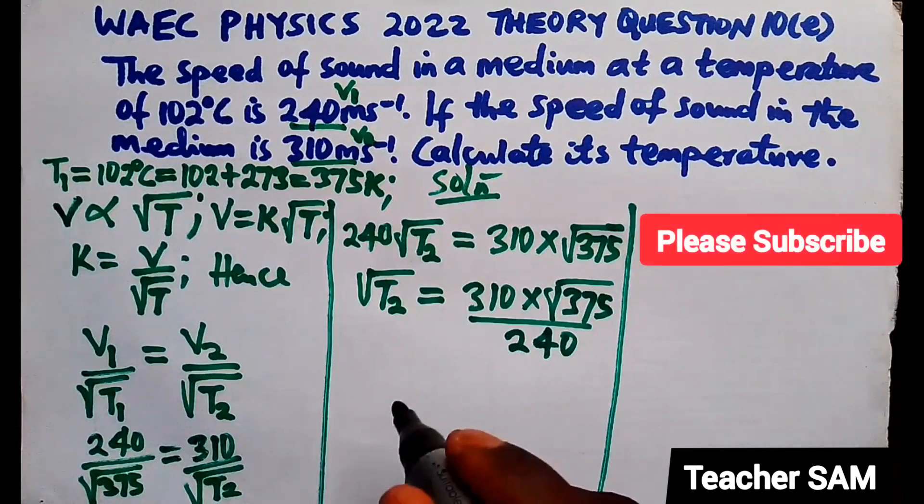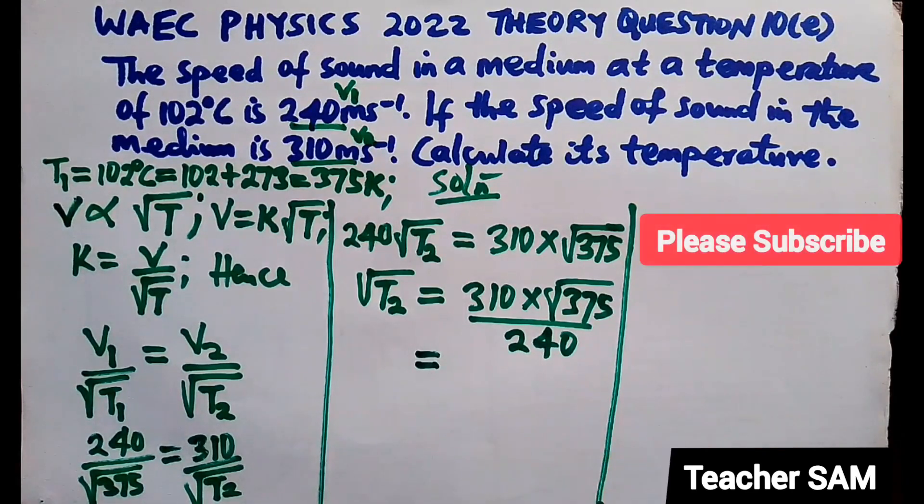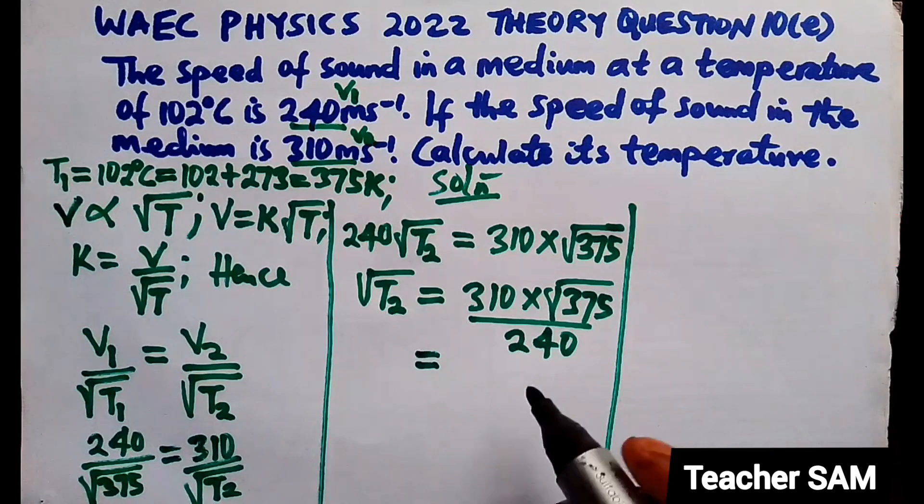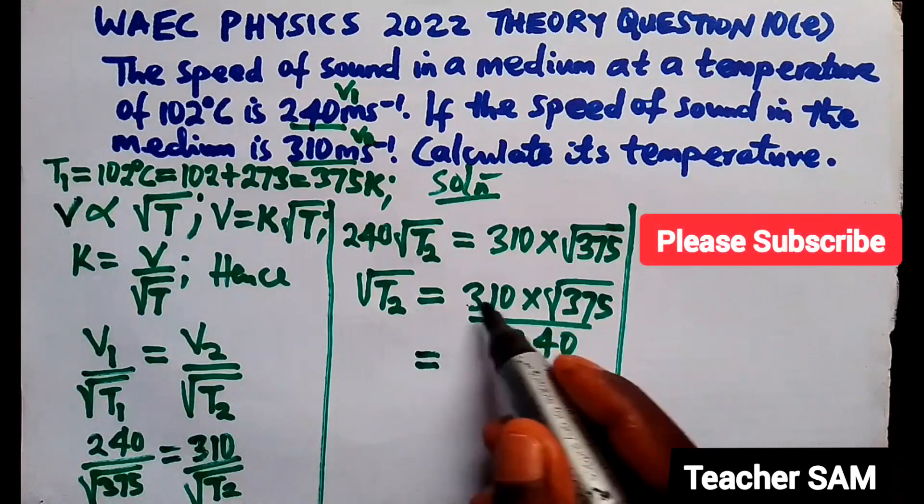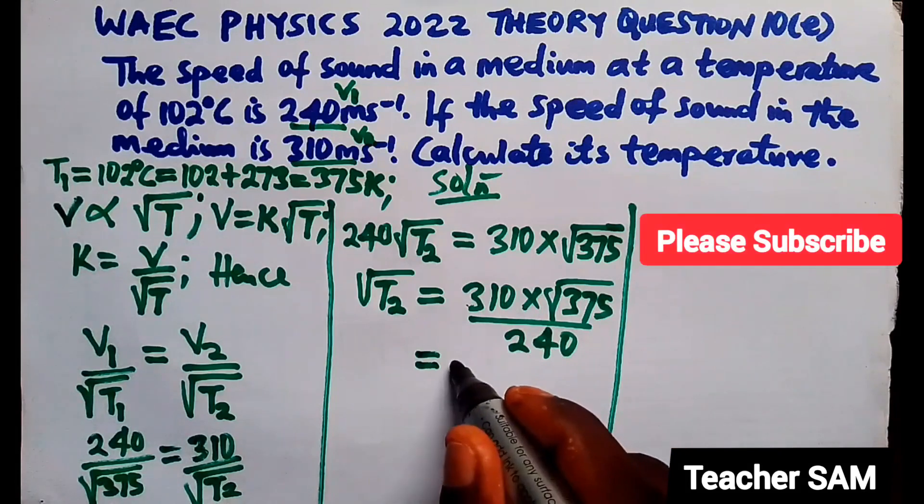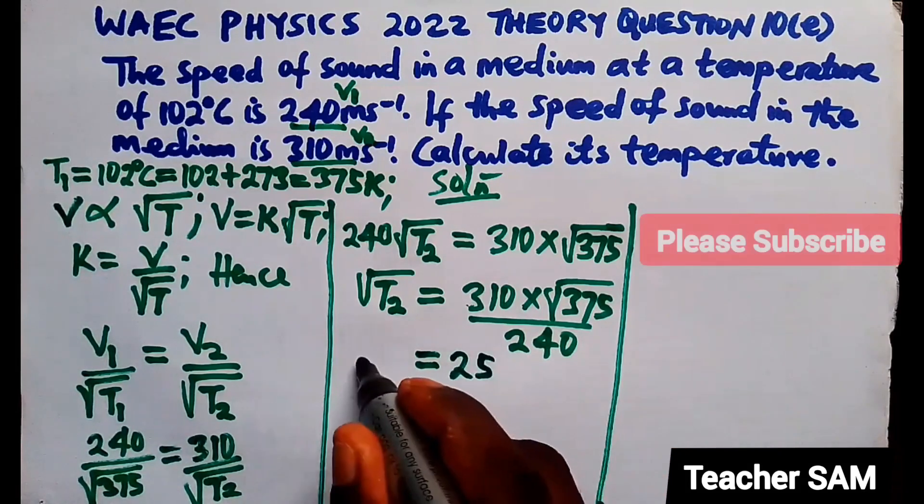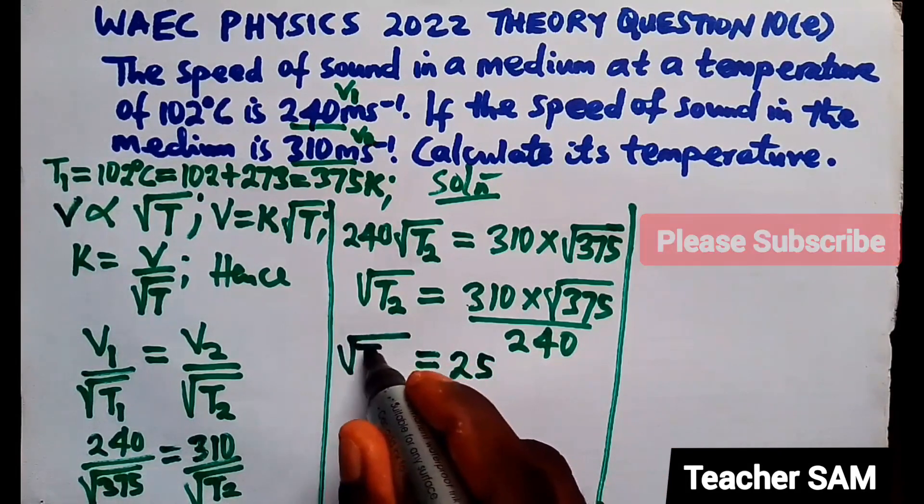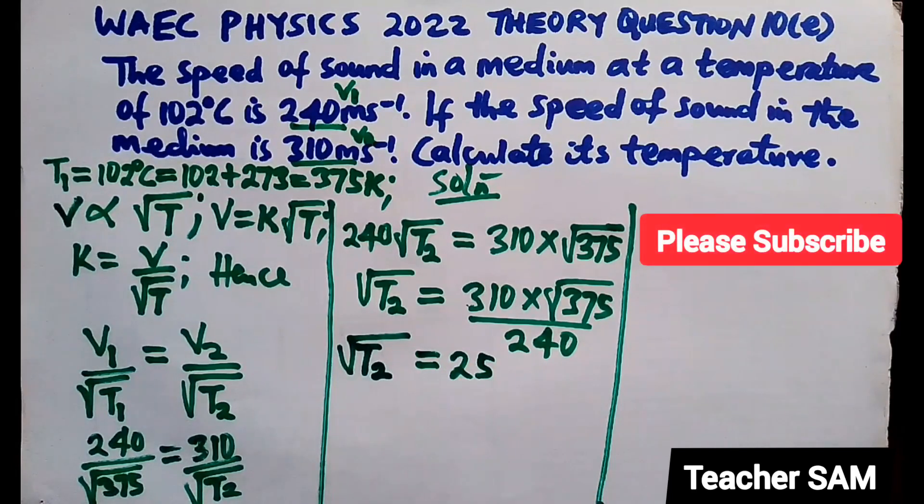Now, you just go ahead, use your calculator because it's allowed for this kind of exam. So, you multiply this by this. Divide your answer by this. If you do that, you're going to have 25. So, that is to say that square root of T2 is given all this.